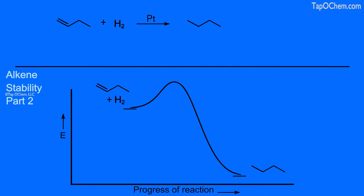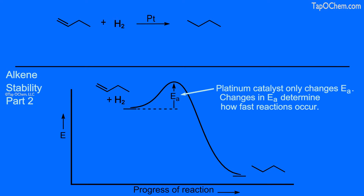On the top of the screen, we see the reaction of 1-butene with hydrogen and a platinum catalyst to give butane. A simple representation of this reaction coordinate diagram is shown below. Let's place the dashed horizontal line from the energy level of the reactants and label the activation energy as the difference in energy from this dashed line to the top of the reaction coordinate. The platinum metal is a catalyst that only affects the activation energy, which is related to how fast the reaction occurs. For our discussion, how fast this reaction occurs is not important since we are only interested in the potential energy of the reactants and the products.